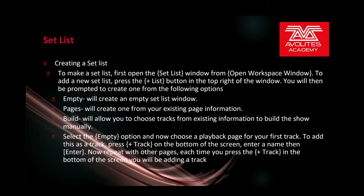Creating a set list: to make a set list, you first open the set list window from the open workspace window. To add a new set list, press the plus list button in the top right of the window. You will then be prompted to create one from the following options: Empty will create an empty set list. Pages will create one from your existing page information. Build will allow you to choose tracks from existing information to build the show manually.